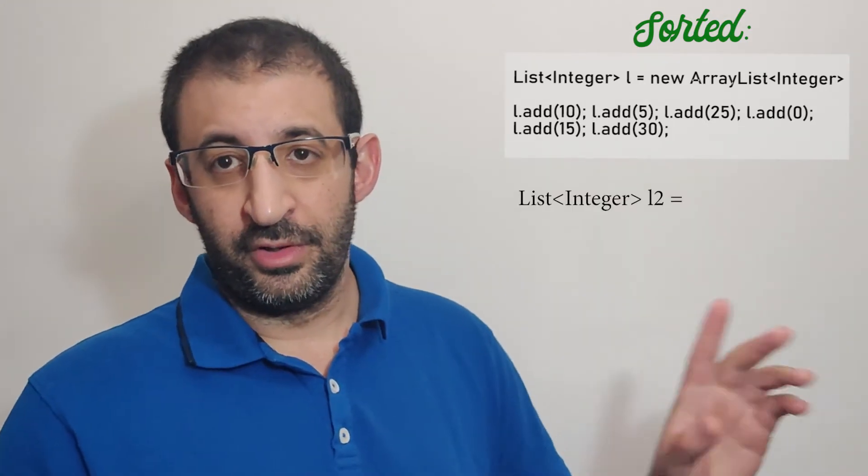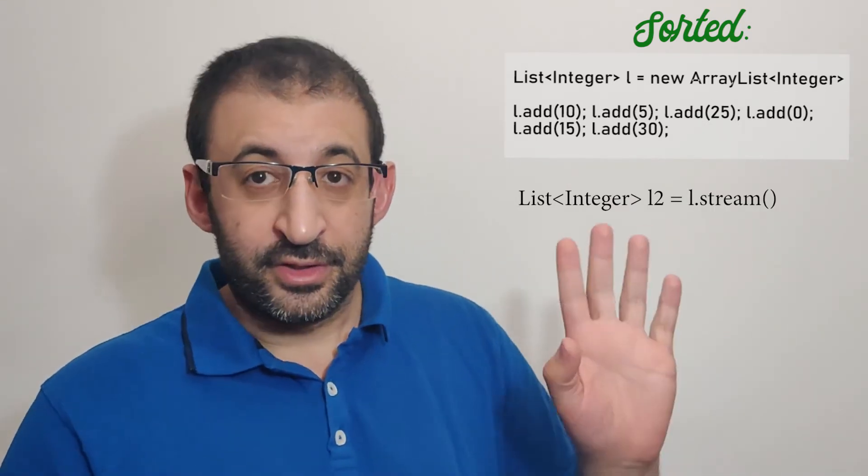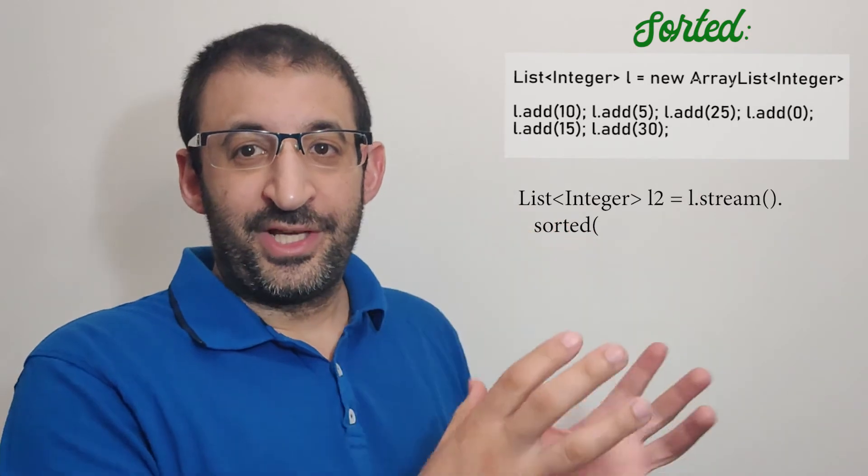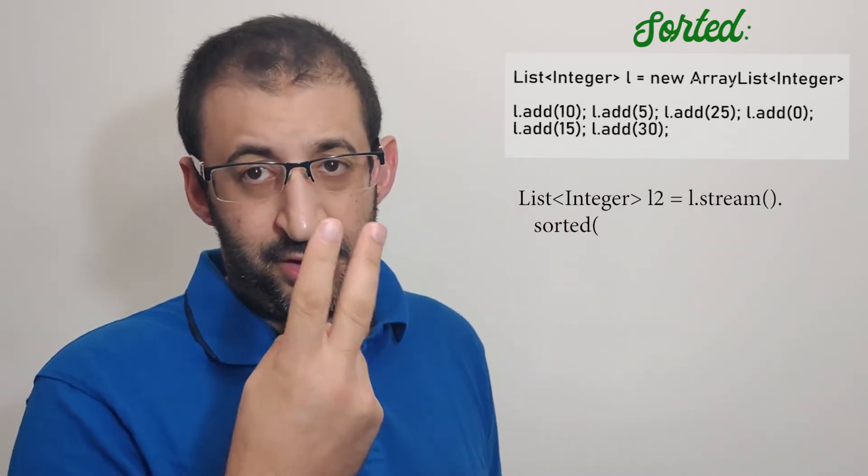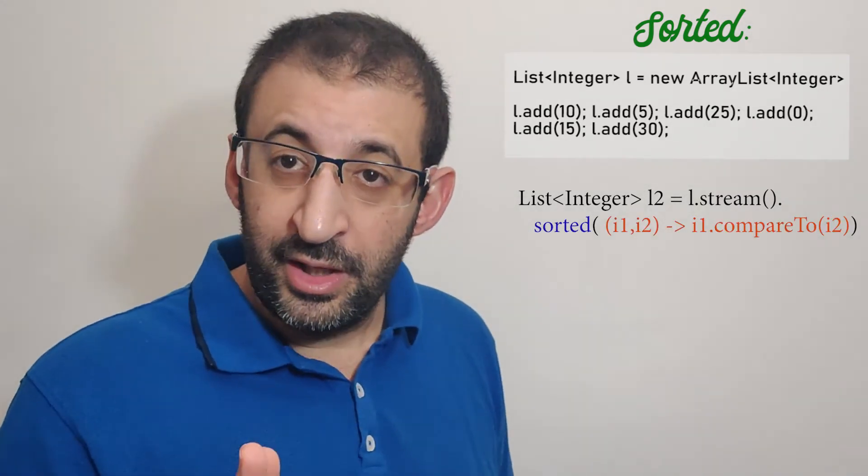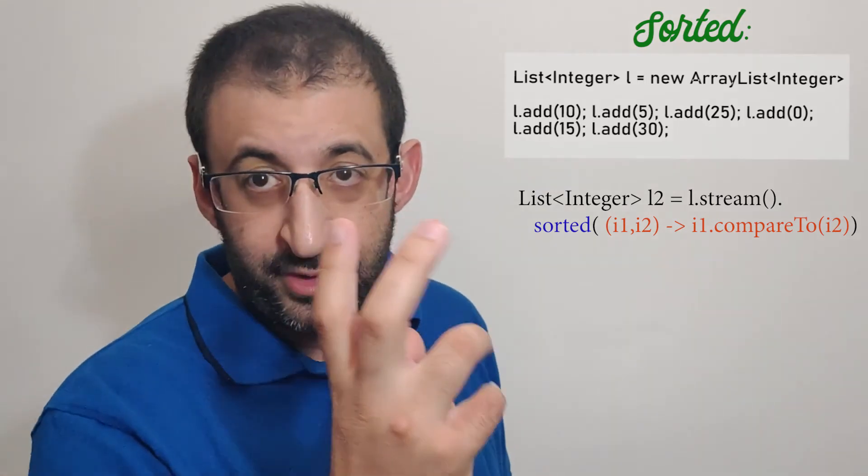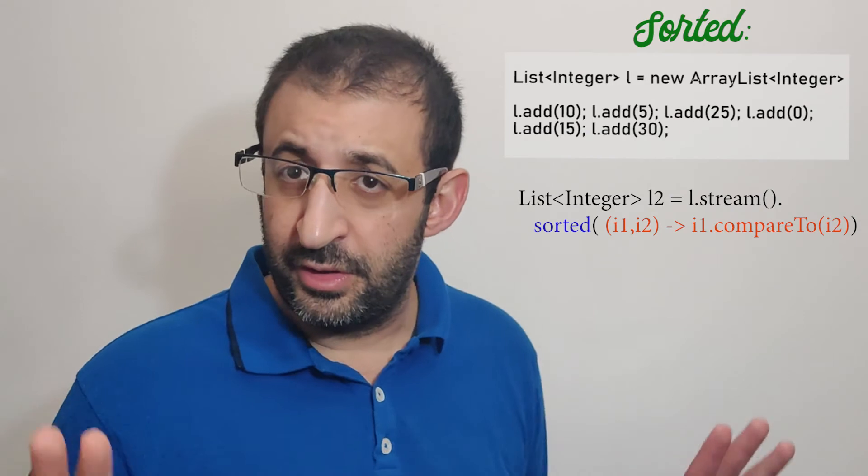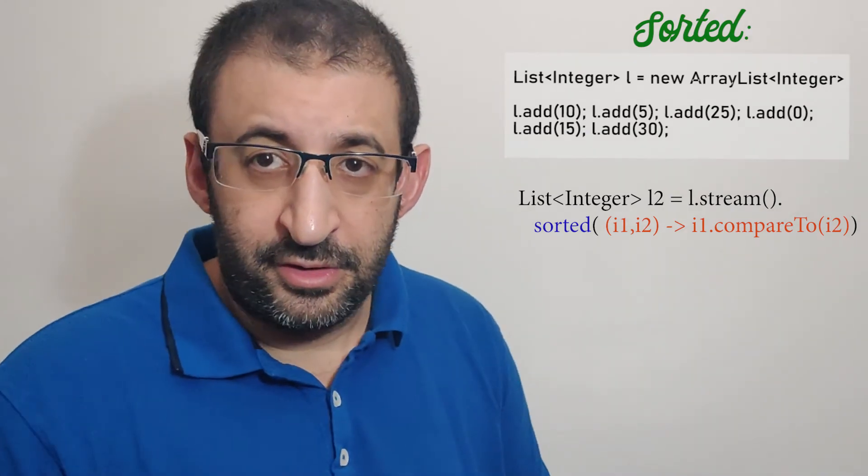Now I want to sort my list by reversing the order of elements, from the biggest to the last. For this, I will use my own custom order. It's very simple: list2 equals list1.stream().sorted, but here I will put my Comparator. The lambda expression has two arguments: (e1, e2) -> e1.compareTo(e2). This instruction makes the default sorted order by natural order.